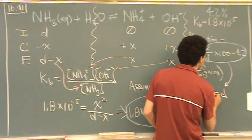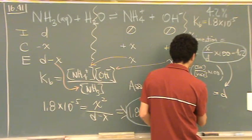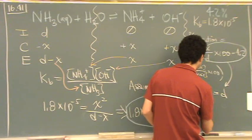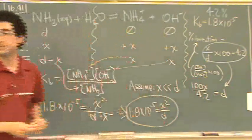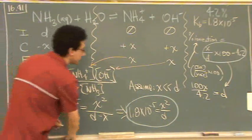d is going to equal x... I guess I should say 100x divided by 4.2. There's d from that percent ionization. So I'm going to take that.